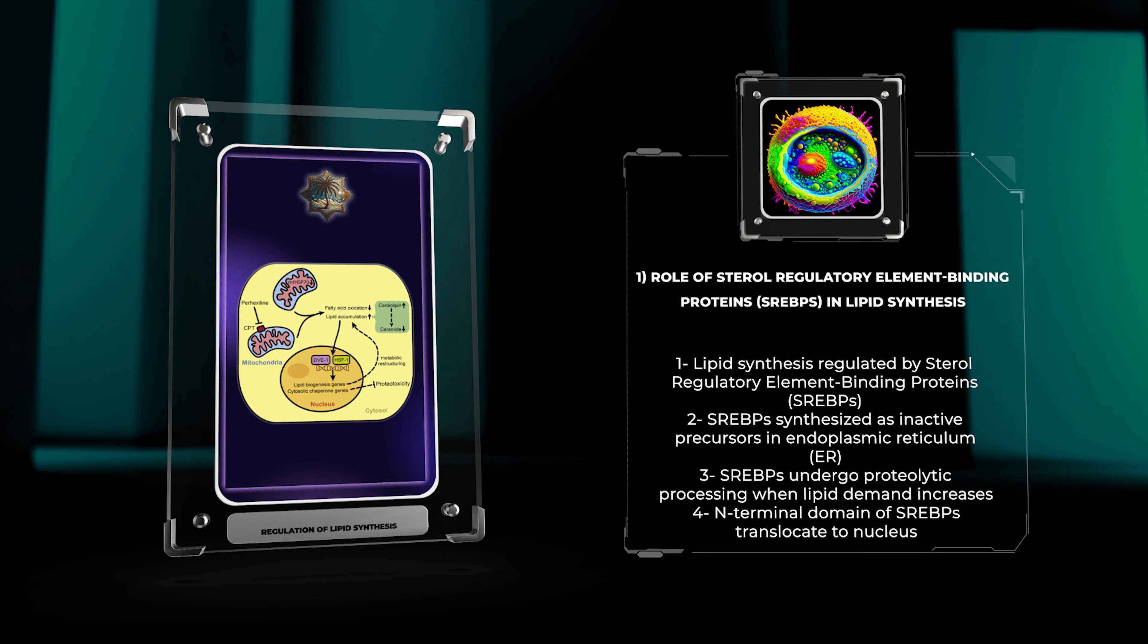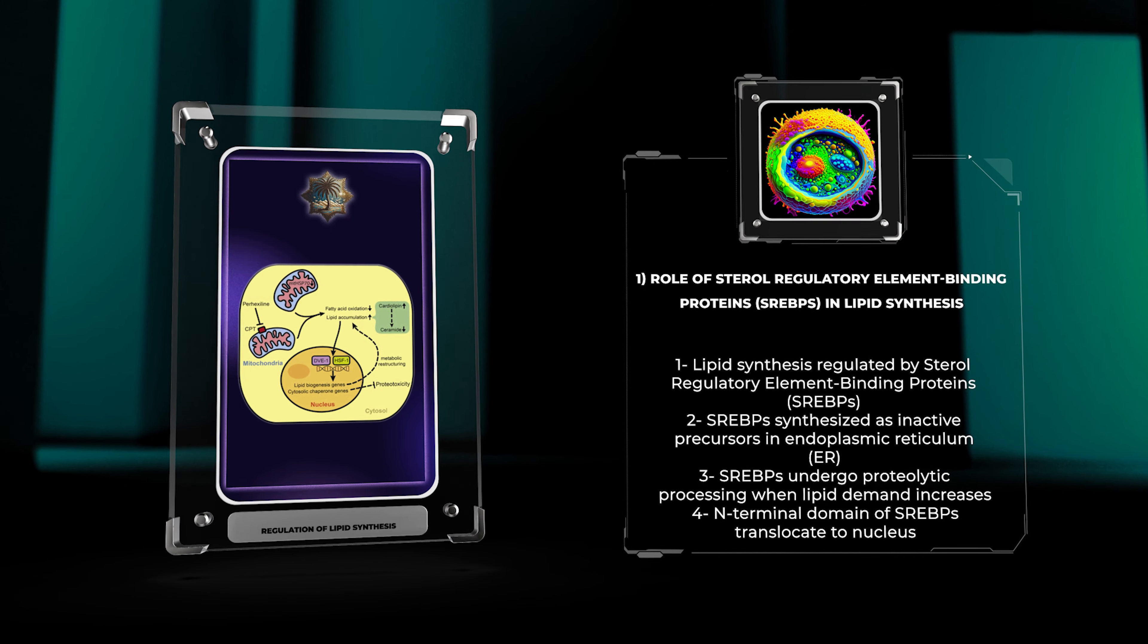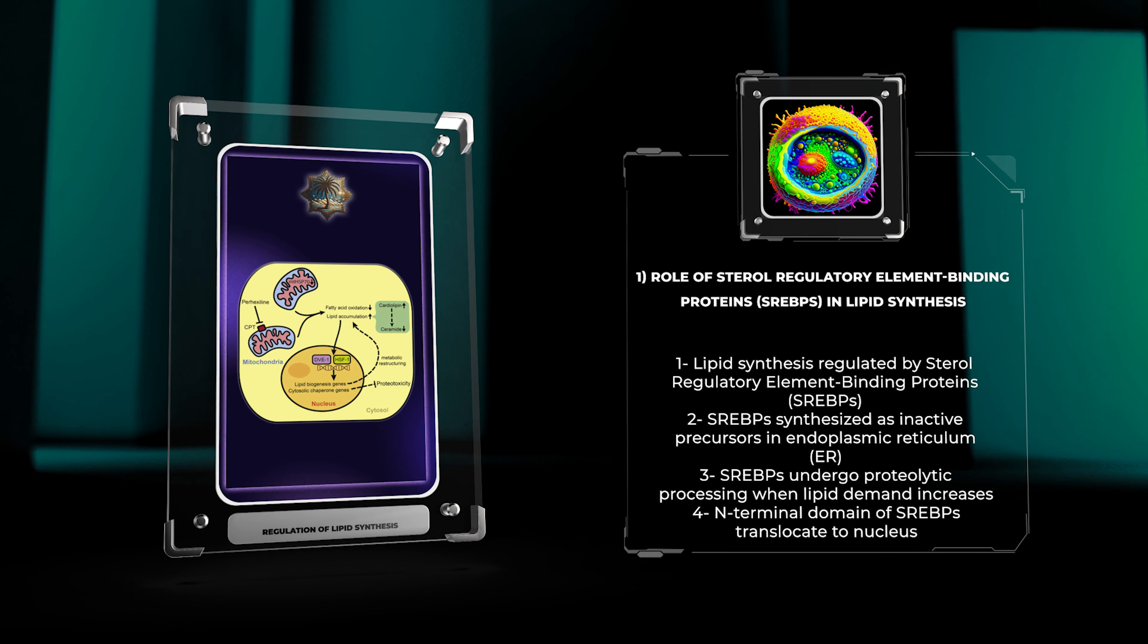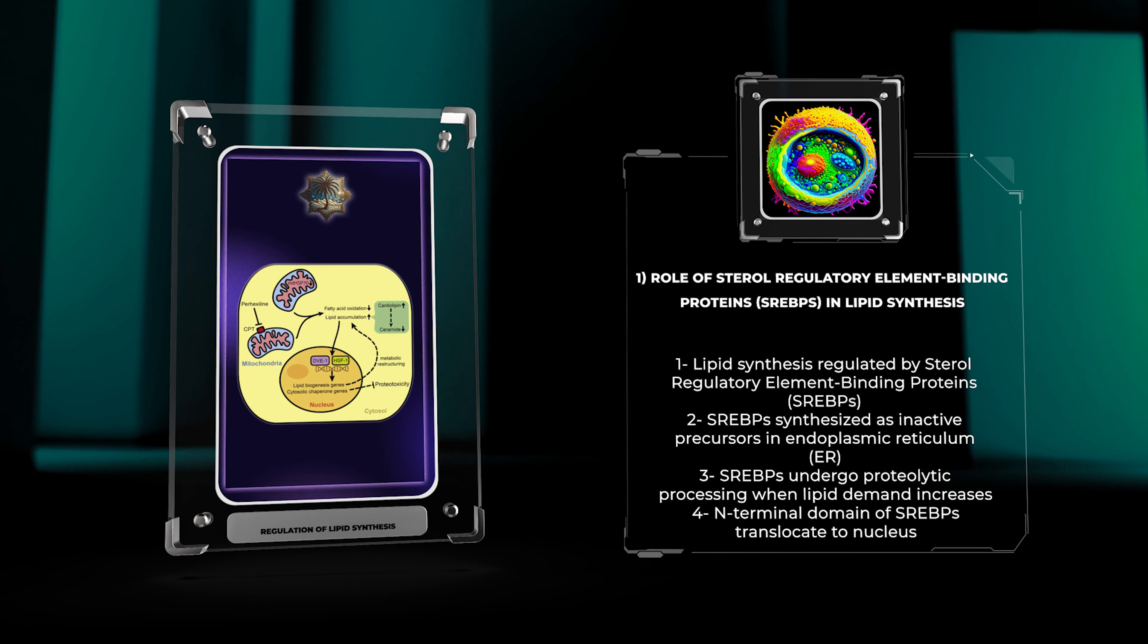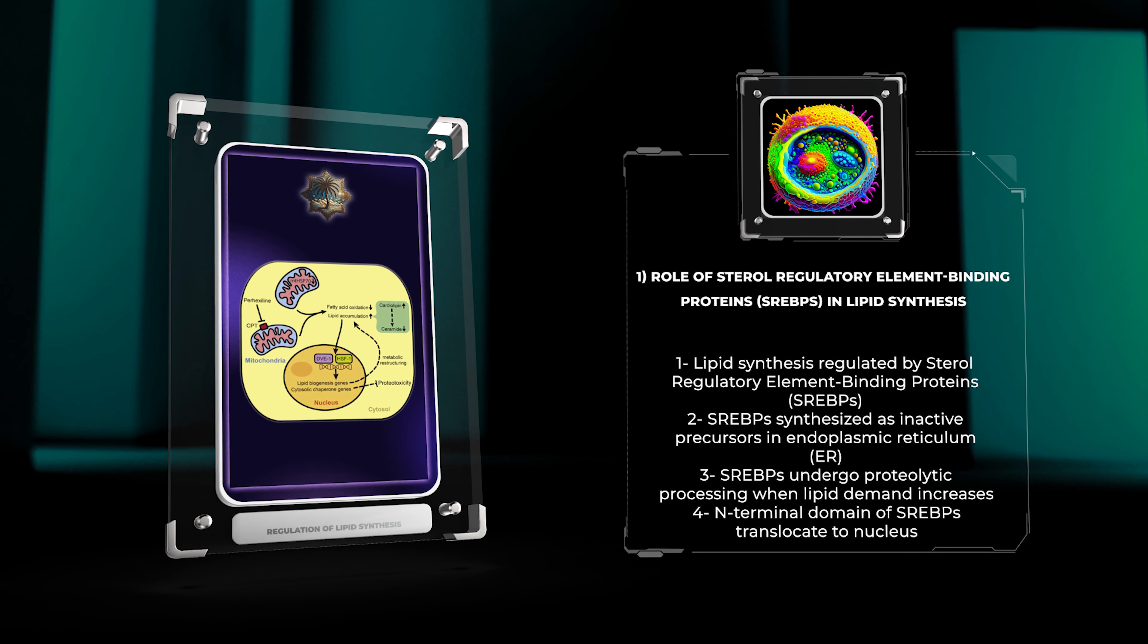SREBs undergo proteolytic processing, releasing the N-terminal domain, which translocates to the nucleus. In the nucleus, SREBs bind to specific DNA sequences known as sterol regulatory elements (SREs) and promote the transcription of genes involved in fatty acid and cholesterol synthesis. This tightly regulated process ensures that lipid synthesis is responsive to cellular needs.